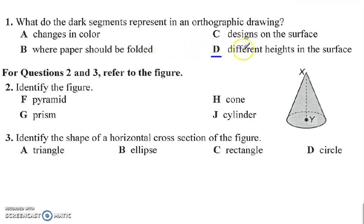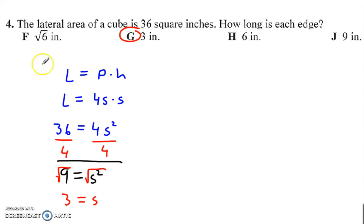Number one, that is D, different heights of the surface are represented by dark segments. Number two, I won't insult your intelligence by telling you that answer. Number three, a horizontal cross section. That means if you cut it this way, you are going to see a circle.